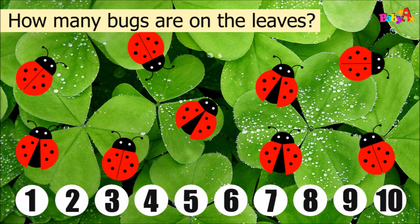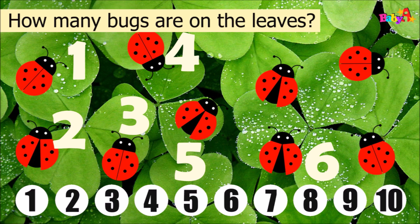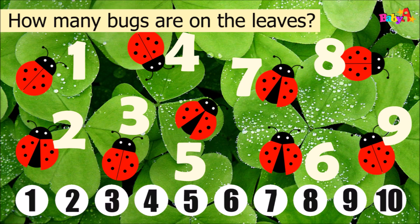How many bugs are on the leaves? 1, 2, 3, 4, 5, 6, 7, 8, 9. Nine bugs are on the leaves.